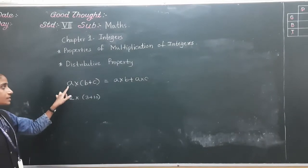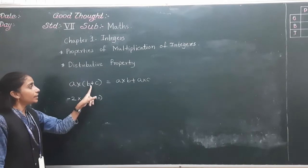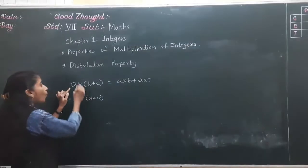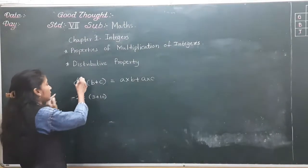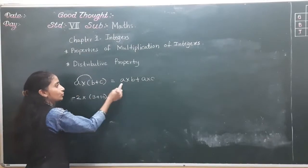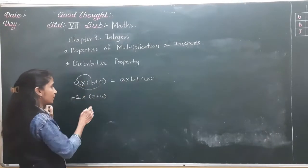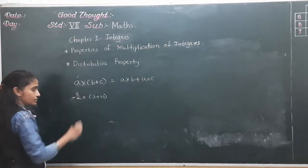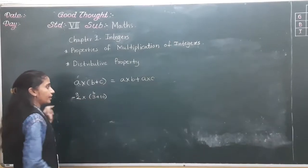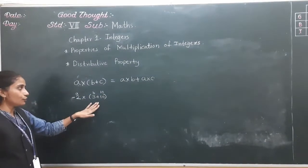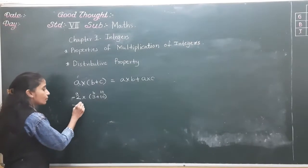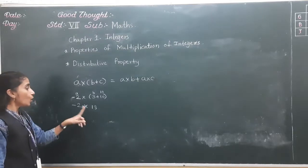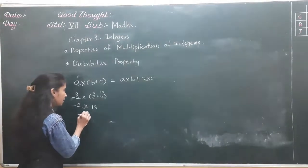Let's move towards the distributive property. The formula is: A into bracket B plus C equals A into B plus A into C. For example, A is minus 2, B is 3, and C is 10. First method: we open the bracket — minus 2 into 3 plus 10, which is minus 2 into 13, giving minus 26.